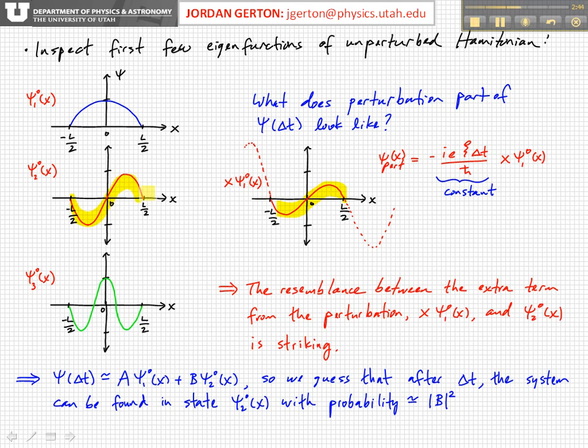They look very much like the same, they're not the same. They're not exactly the same between minus L over 2 and L over 2. If you looked at this closely, we'd see that the peaks wouldn't be exactly aligned. So x times a cosine is not equal to a sine of half the wavelength, but they resemble each other quite strongly.